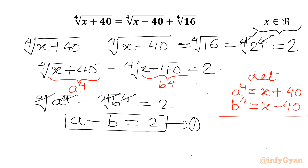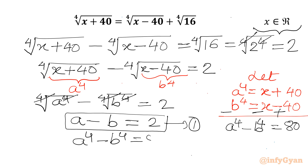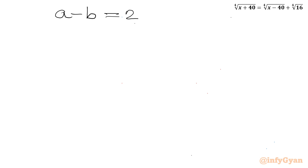Now I will subtract the second equation from the first. We get a⁴ minus b⁴ equals 40 plus 40, which is 80. So our second equation is a⁴ minus b⁴ equals 80. Now this is a system of equations in a and b, from which we can find x.